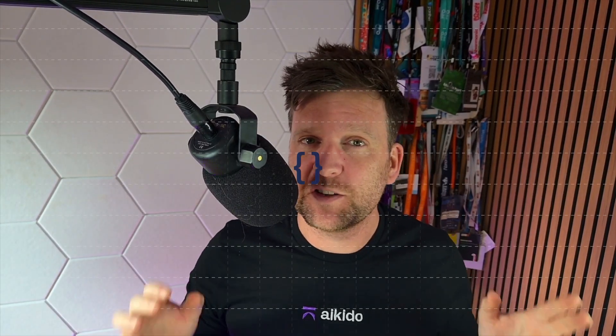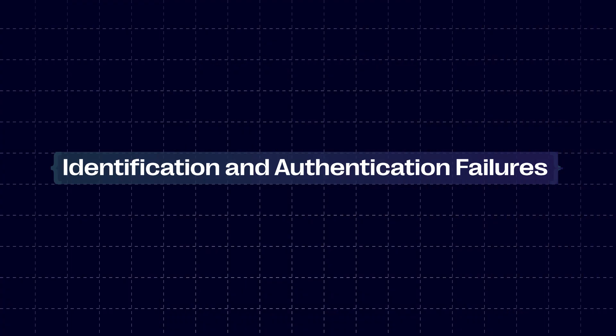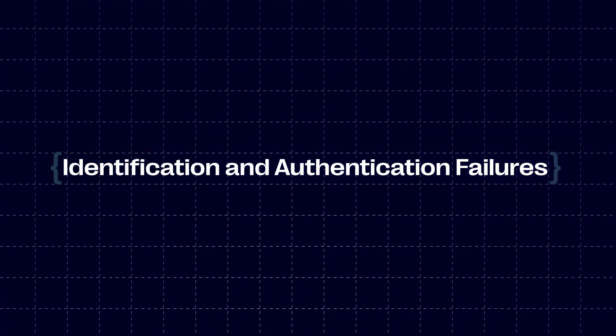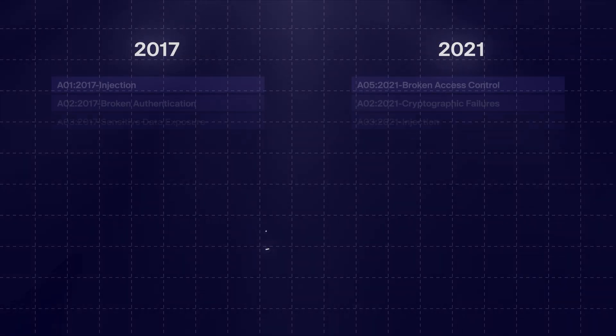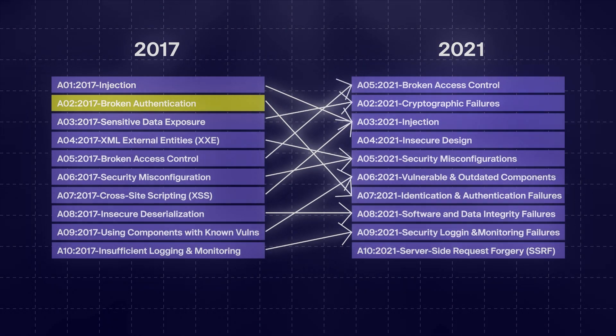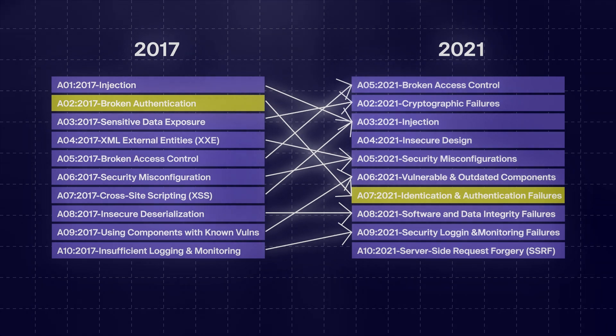Hello everyone! Welcome to another video. Today we're discussing another one of the OWASP Top 10. This time we're looking at identification and authentication failures. Now this actually used to be number two in previous iterations and it's slid all the way down to number seven, but it's very relevant and we see these attacks quite often out in the wild, also because they relate to fairly low-hanging fruit.